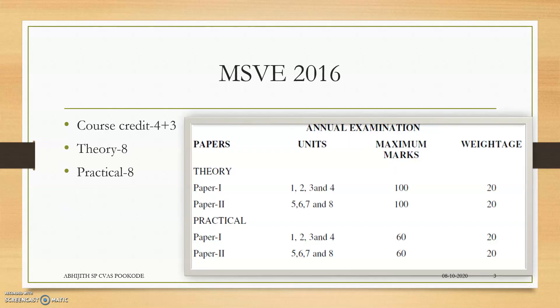The course credit is 4 plus 3. This is the largest credit in any veterinary science topic — 4 plus 3. Whenever you score more marks in a course having more credits, that can increase your OGPA.